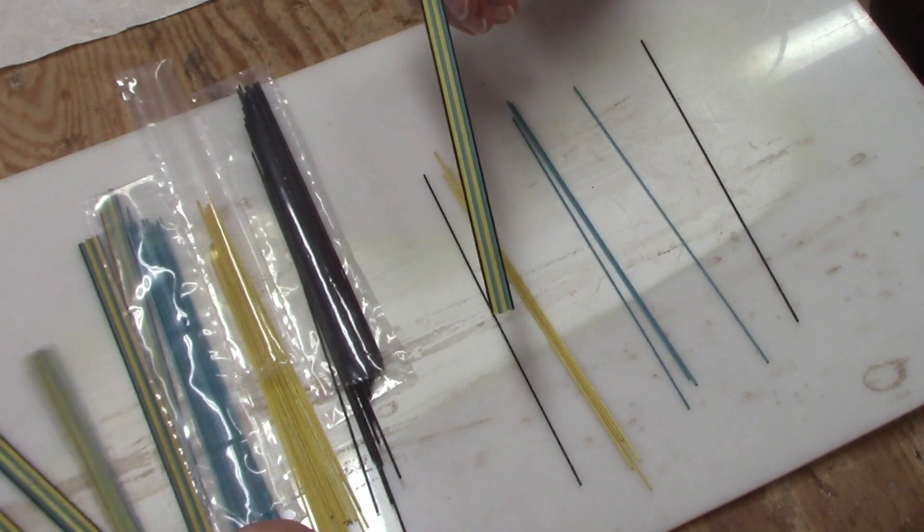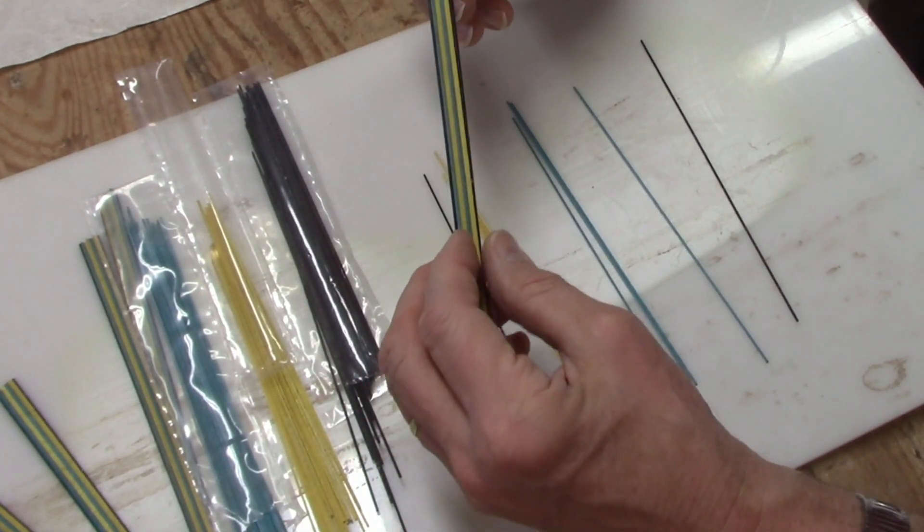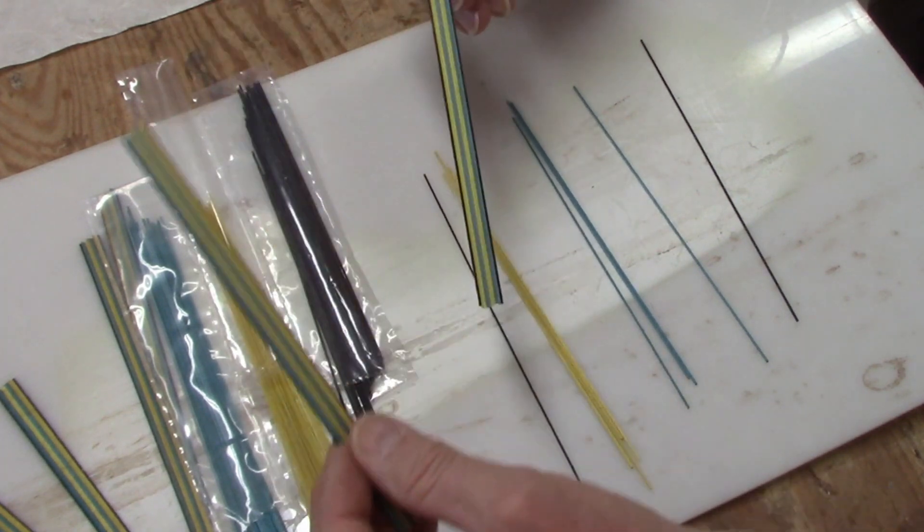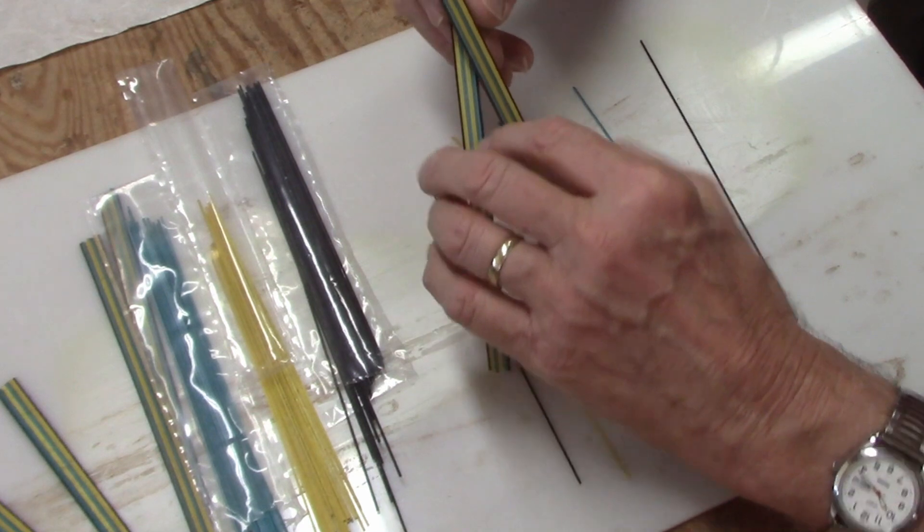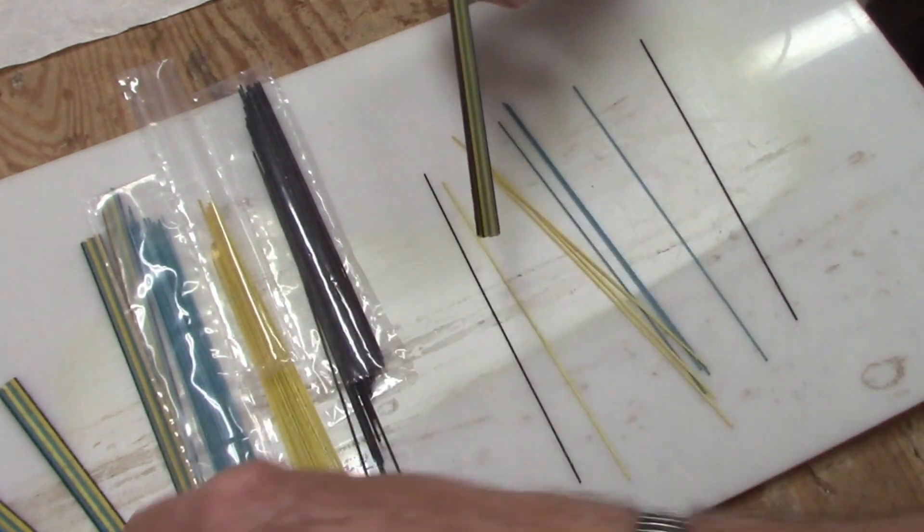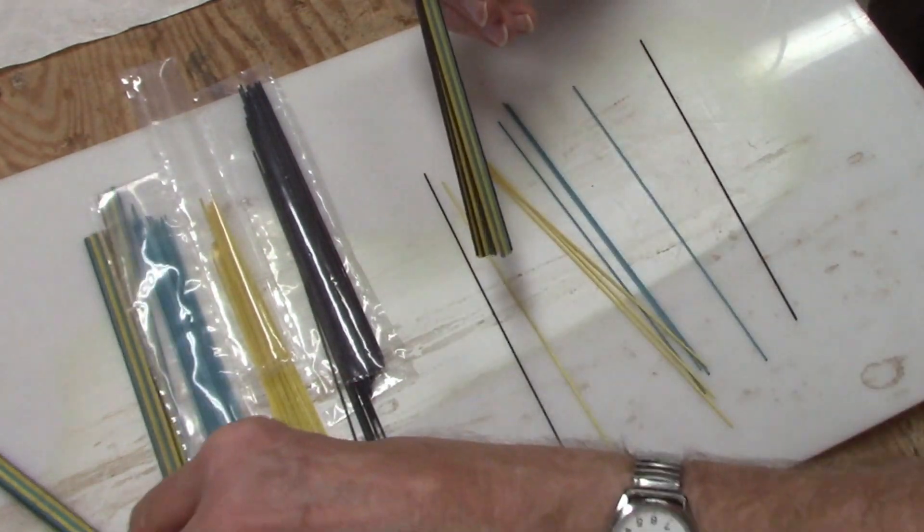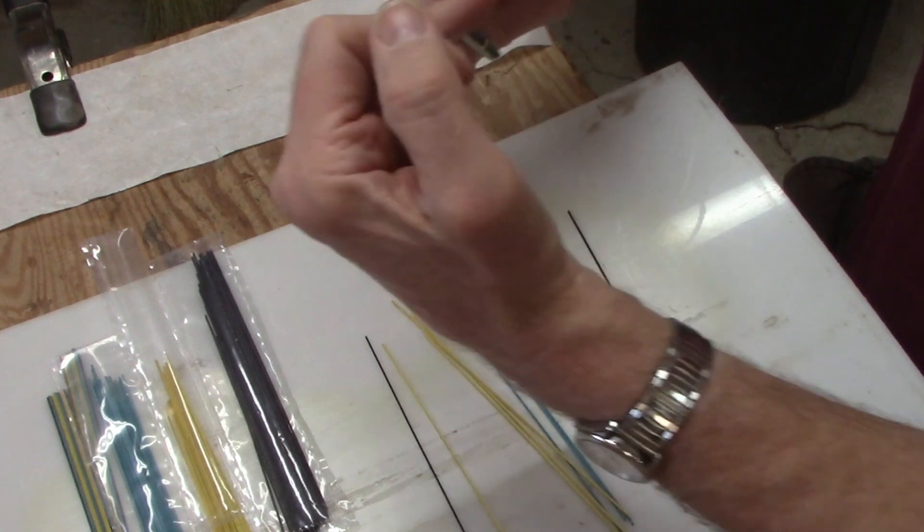So I'll get a bunch of these glued up in columns, and then I'll glue them together in the pattern I want to make rows.